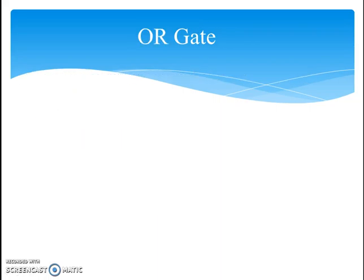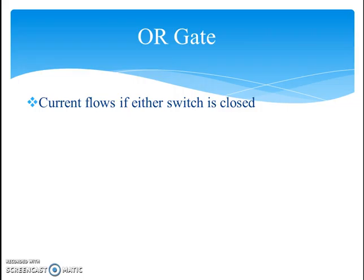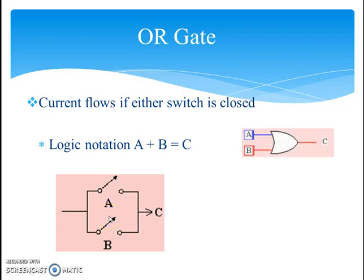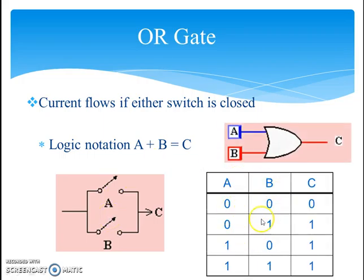Now let's look at our third gate, which is the OR gate. The OR gate can also be analyzed in terms of an electrical circuit where the switches are connected in parallel. Even if one of the switches is closed and the other is open, I will still get the output as high. I will get a high output when both switches are closed, and a low output when both switches are open. The truth table replicates the same: when both are open, I get no output; when one switch is closed, I get logic 1; when both are closed, I get logic 1. The logic symbol of the OR gate has A and B as inputs and C as output.